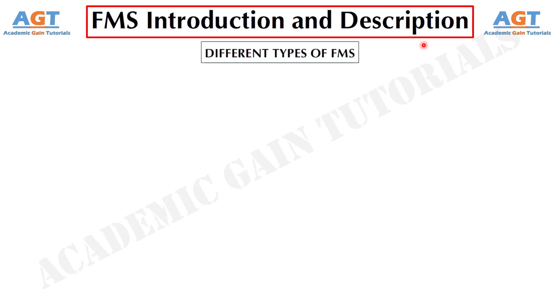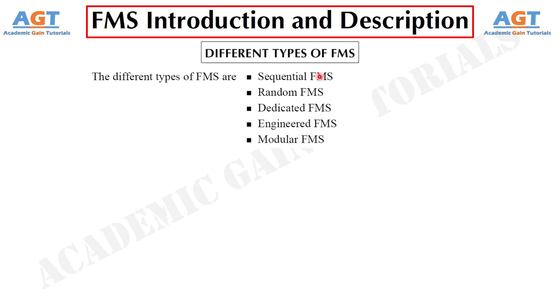Different types of flexible manufacturing systems are: sequential FMS, random FMS, dedicated FMS, engineered FMS, and modular FMS.